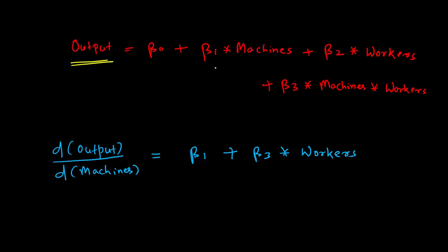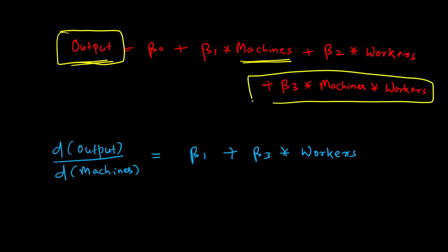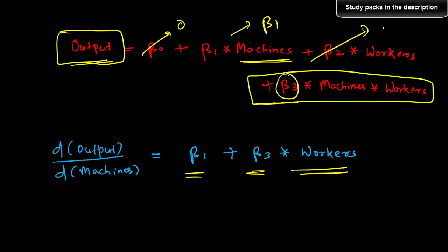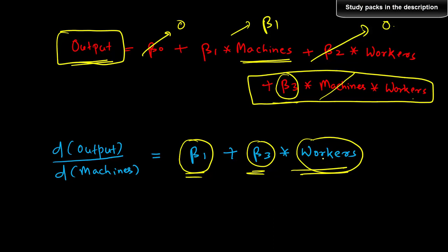Let's understand the mathematics. To capture the joint effect of machines and workers on output, we include an interaction term — a third term — by simply multiplying machines with workers and associating it with parameter β₃. The marginal effect, which is the change in output with respect to change in number of machines, becomes β₁ + β₃·workers. You can see the marginal effect now depends not just on β₁ but also on β₃ and the number of workers. If you do not increase workers, the impact is much smaller.